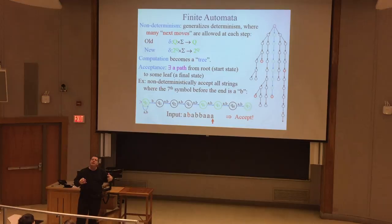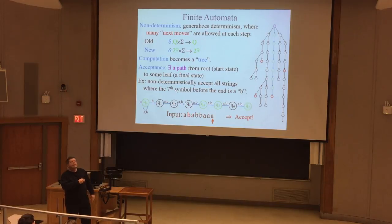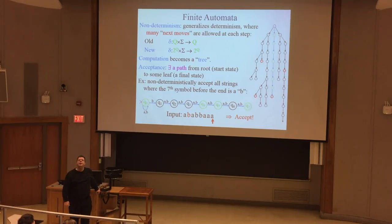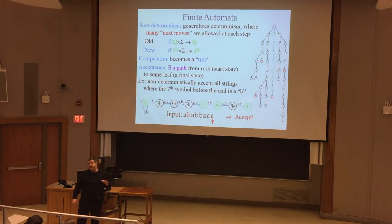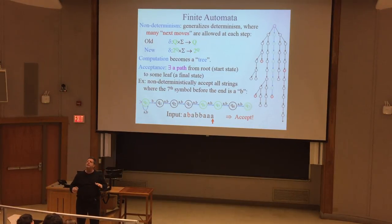Instead of animating this execution, we could draw it as a bifurcating tree. A tree is a generalization of a linked list - a linked list is a tree where every node has exactly one successor. Non-determinism is therefore a generalization of determinism, or conversely, determinism is a special case of non-determinism where every node has exactly one next state.